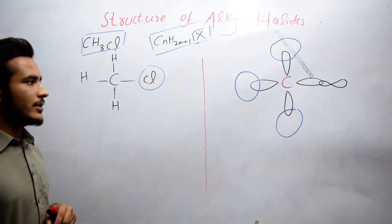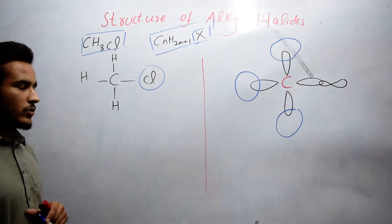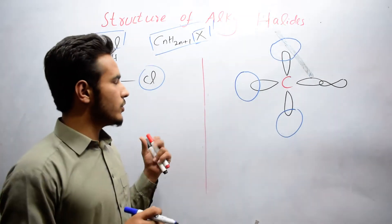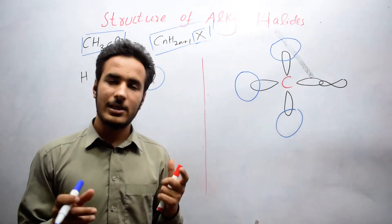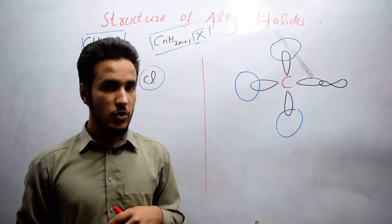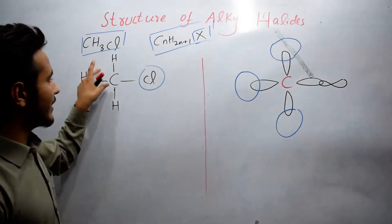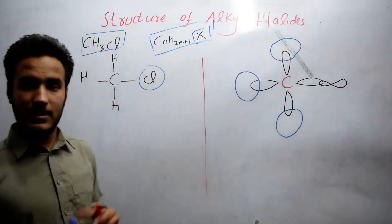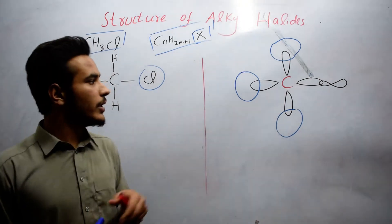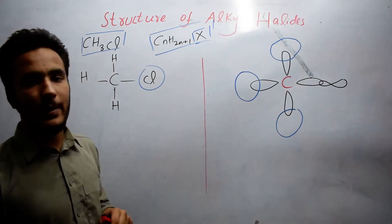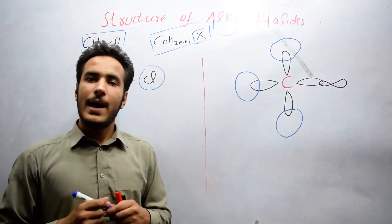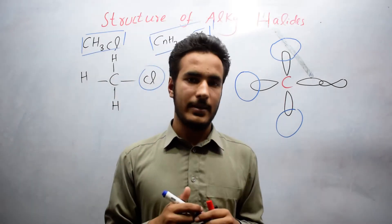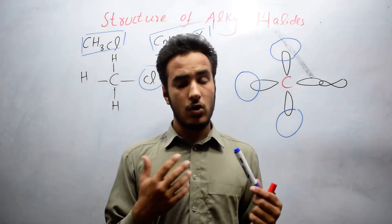But in reality, carbon has only two unpaired valence electrons in its outer orbital — so how can carbon make four bonds? This is a great question. Hybridization takes place, meaning the mixing of orbitals occurs.